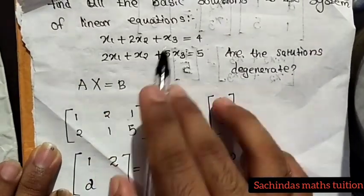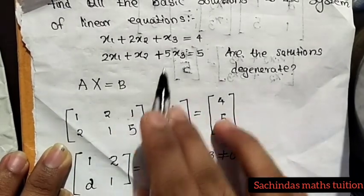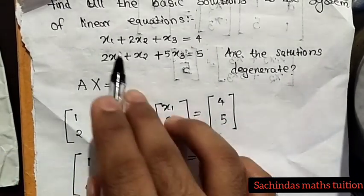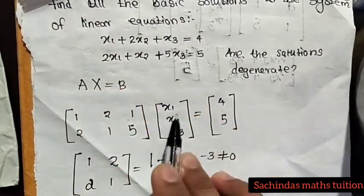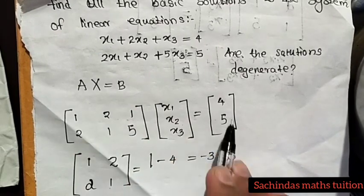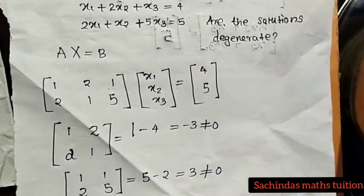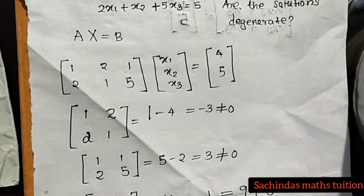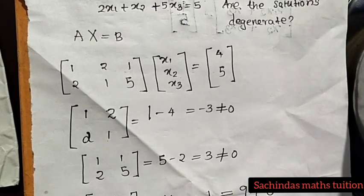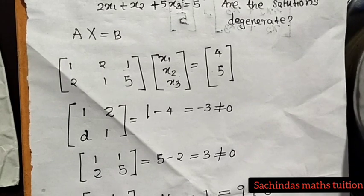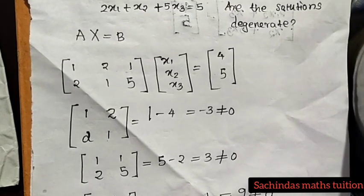The coefficient matrix has entries 1, 2, 1 and 2, 1, 5, with variables x1, x2, x3. So Ax equals b. We check the rank — the rank of this 3 by 3 system, and then a 2 by 3 sub-case.